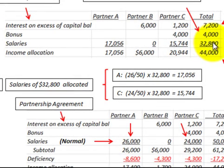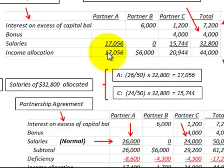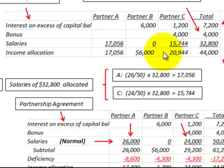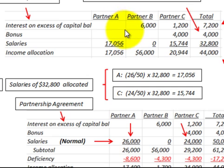Looking at the final income allocation: Partner A receives $17,056 in salaries only. Partner B receives $6,000, which is just the interest on excess capital. Partner C receives interest plus bonus plus salaries, totaling $20,944. Adding $17,056 + $6,000 + $20,944 gives the total income allocated for the year of $44,000, confirming the allocation balances correctly.